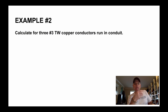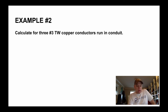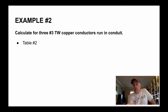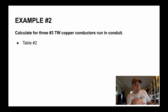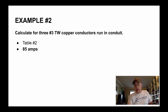Example two: calculate the ampacity for three number 3 TW copper conductors running in conduit. Since it's not a single conductor in free air and it's copper, we go to table 2. TW wire is rated at 60°C, so we use the 60-degree column in table 2. The columns go 60°, 75°, 90°, 110°, 125°, and 200°. Running our finger down to number 3 in the 60-degree column, we get 85 amps.